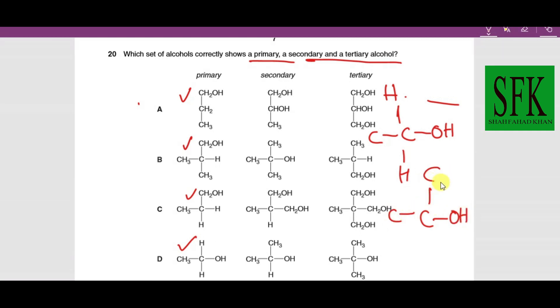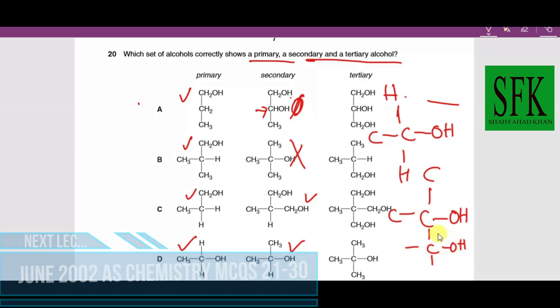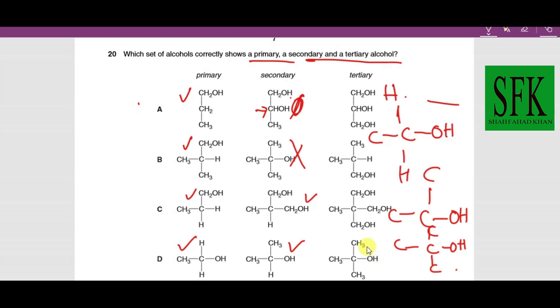Secondary is when the carbon to which the OH is bonded is directly bonded to two other carbon atoms—it's only in option D. Tertiary is when the carbon to which the OH is bonded is directly bonded to three other carbon atoms, and that's only in option D. So option D is the best choice. Thank you so much, the rest will be covered in the next video.